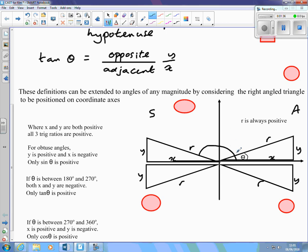Going round now to angles between 180 degrees and 270 degrees, reflex angles. x and y are both negative here. y over r, sine is negative. x over r, cos is negative. The only one here that's positive is tan.